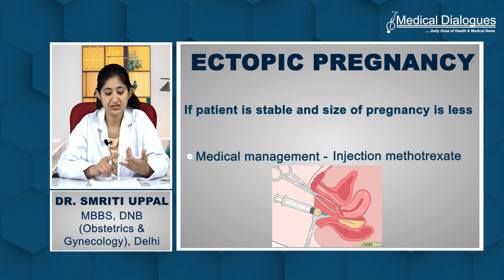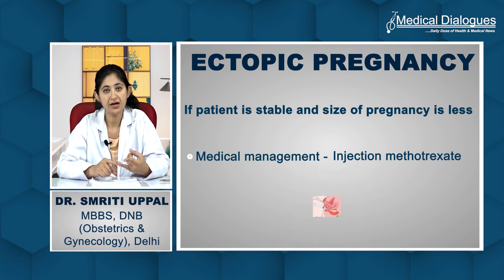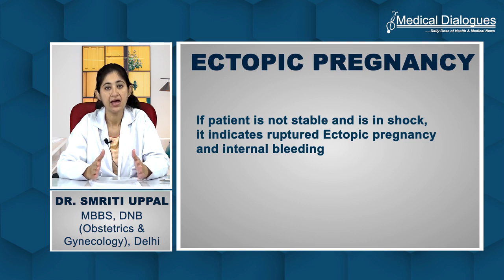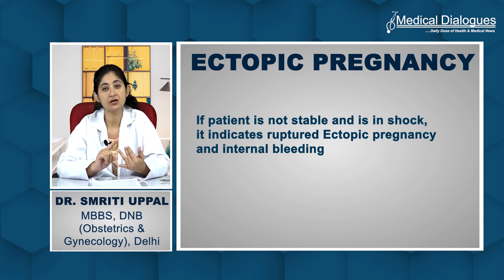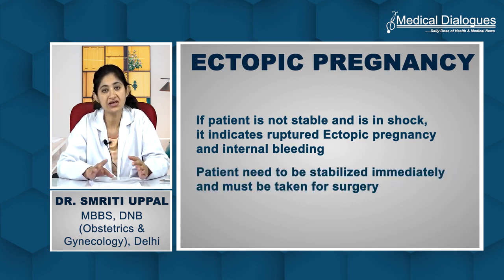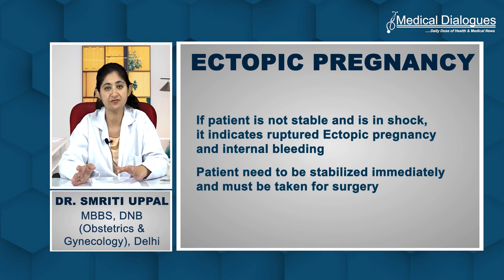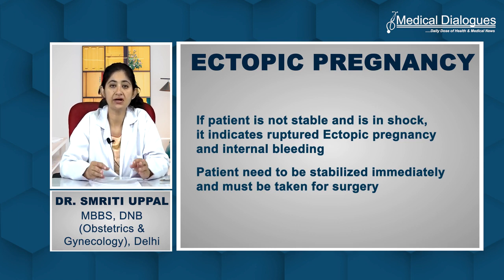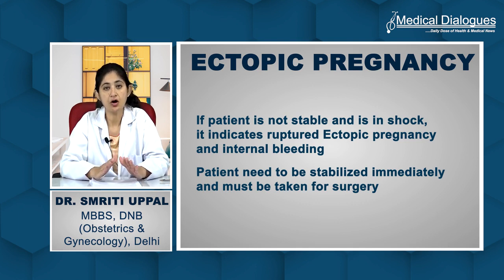Now comes the situation where the patient arrives already sick — pulse rate very high, BP falling, patient in shock. That means the tube has ruptured and there is internal bleeding. For such a patient, we cannot wait; we cannot wait for another beta-HCG report or for blood. We have to immediately stabilize the patient and take her for surgery to stop the bleeding. Mostly it will be one of the tubes that has ruptured — we clamp the tube to stop the bleeding, prevent further blood loss, and stabilize the patient.